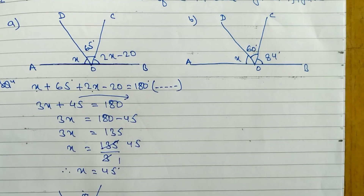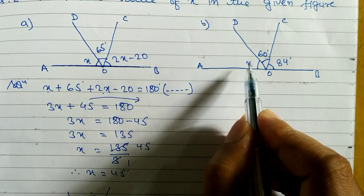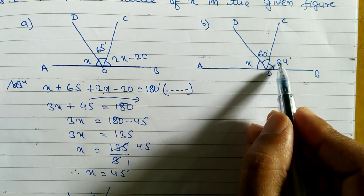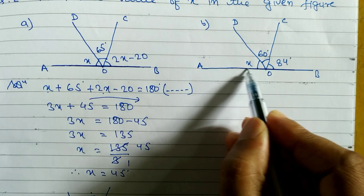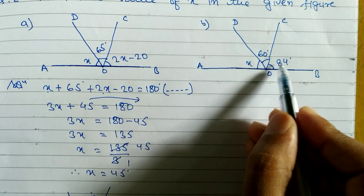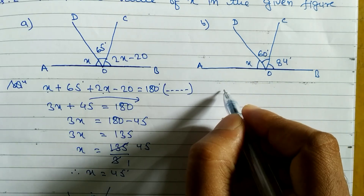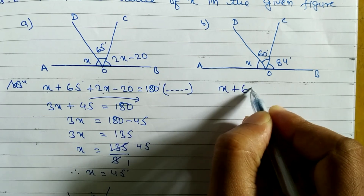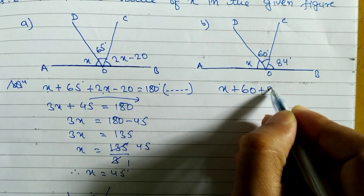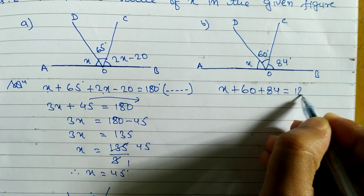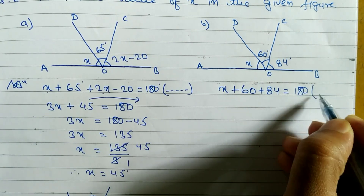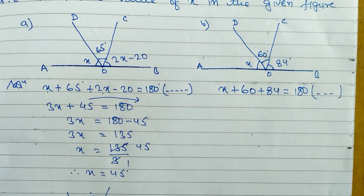Now look at question 2b. Here also you can see three angles given and this is a straight line, so when you add these three angles we get 180 degrees. The reason is: supplementary angle. So x plus 60 plus 84 is equal to 180 degrees. You have to write down the reason — it is necessary to write.